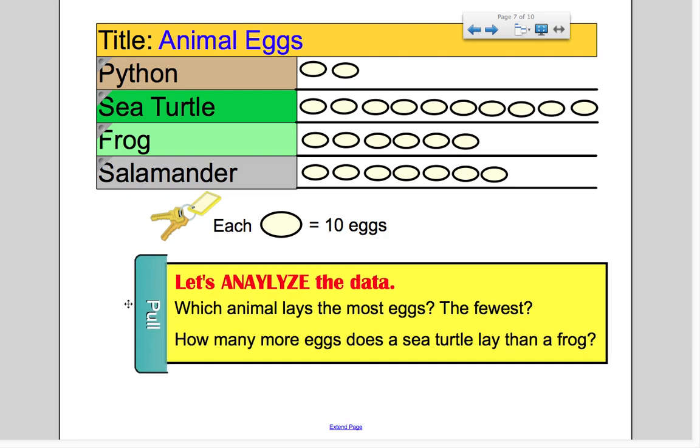So, looking at our completed pictograph, which animal lays the most eggs? If you said sea turtle, you'd be correct. We can easily visualize all of the eggs and see that that one is the most. Which animal lay the fewest? That's easy, too. The python only has two groups of the 10 eggs. How many more eggs does a sea turtle lay than a frog? If I'm trying to compare the data, I can see that the sea turtle and the frog are right here. So, the sea turtle and the frog are the same up to these eggs. But then I notice the sea turtle has 1, 2, 3, 4 more eggs. And I know that each of these eggs represent 10 eggs. So, then I can say 10, 20, 30, 40. The sea turtle actually laid 40 more eggs than the frog.